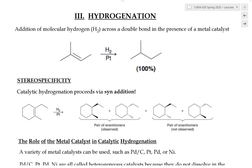Hi guys, in this lecture video I will be discussing the hydrogenation reaction of alkenes. There are many different types of hydrogenation reactions — we can actually perform hydrogenation on alkenes, alkynes, nitriles, and many other functional groups as well.